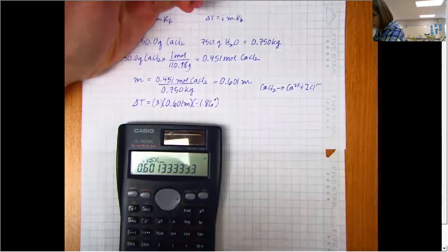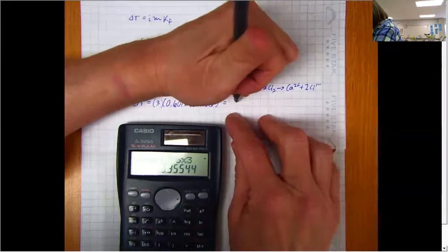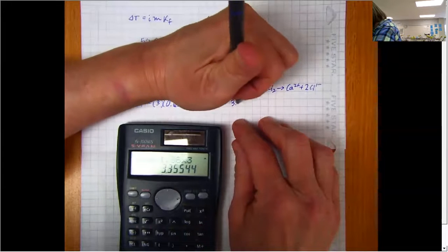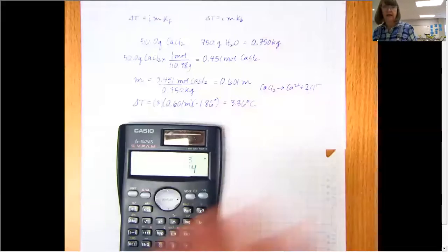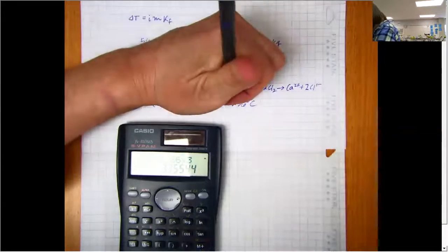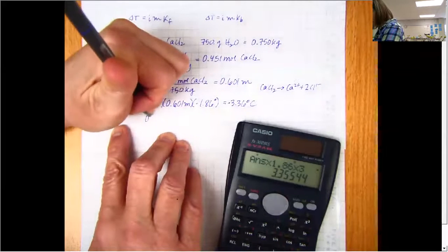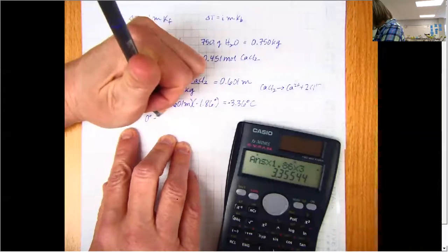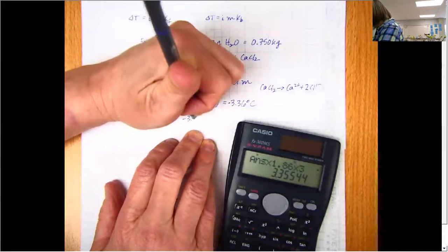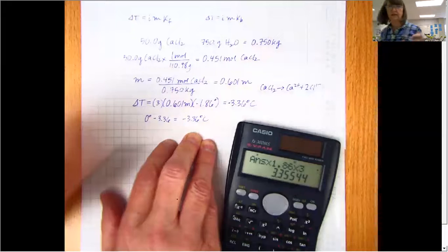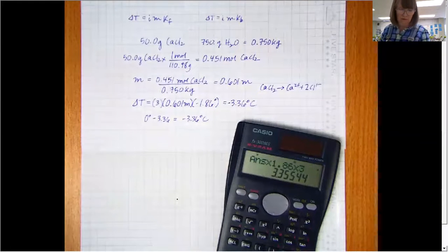So once I do the math on this, I find out that my change in temperature is going to be 3.36 degrees Celsius. Now that's not where I end, sorry, negative. So I'm at zero, because that's the freezing point of water. And then I'm going to subtract the 3.36 to get my new temperature, which is negative 3.36 degrees Celsius. It's pretty easy with water, with that whole zero degrees and 100 degrees, and that's pretty straightforward.